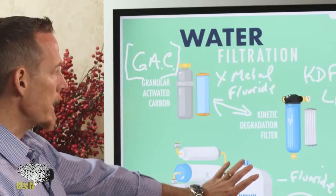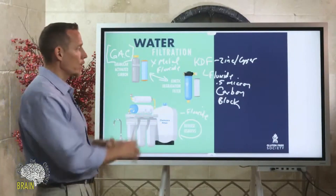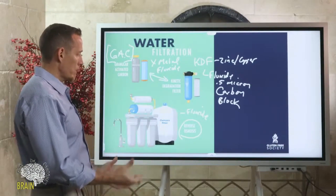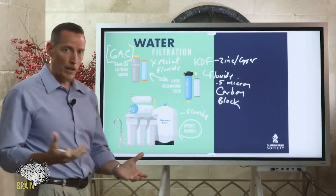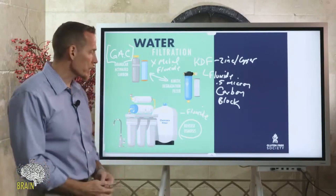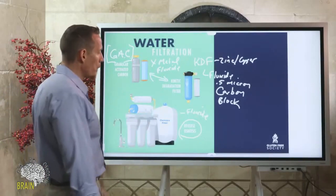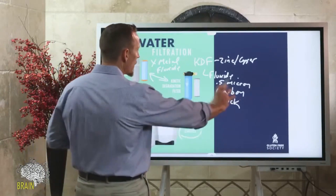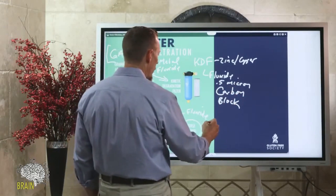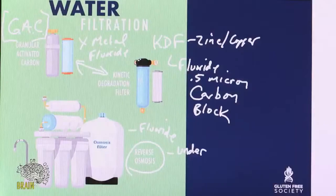Generally speaking, RO filters are really expensive to do for the whole house — priced somewhere in the $10,000 to $20,000 range. But where these work really well is if you have the whole house filter system in place and then an RO filter under your sink in the kitchen for your drinking water and cooking water.